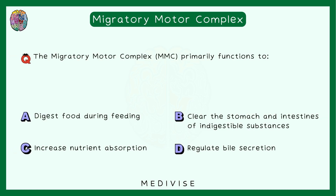Final question: The migratory motor complex primarily functions to — digest food during feeding, clear the stomach and intestine of indigestible substances, increase nutrient absorption, or regulate bile secretion? The correct answer is option B: its function is to clear the GIT of anything that might remain.